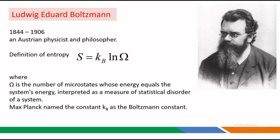Ludwig Boltzmann was an Austrian physicist and philosopher. He gave us the definition of entropy: S is equal to Kb times ln of omega, where omega is the number of microstates whose energy equals the system's energy, interpreted as a measure of statistical disorder of a system. Max Planck named the constant Kb as the Boltzmann constant.